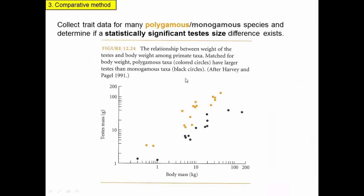What researchers did was collect data from a large number of polygamous and monogamous species of primates. They measured the testes mass and body mass of a bunch of different species — you have to measure both, because the bigger the body is, the bigger everything is, so you'd expect larger testes. Then they color-coded polygamous versus monogamous species and looked for a statistically significant difference. Whatever the body size, the testes size of the polygamous species was always larger than that of the monogamous species, and there was a statistically significant difference between those groups.